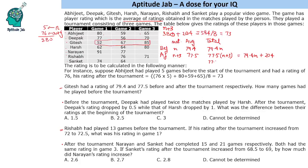Setting up the equation: 77.5n plus 232.5 equals 79.4n plus 204. This gives 1.9n equals 28.5, so n equals 15. He had played 15 matches before the start of the tournament.